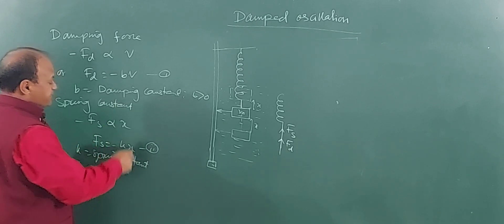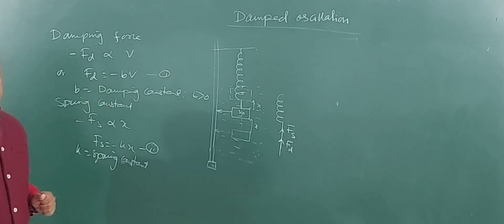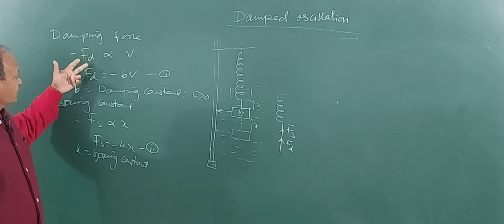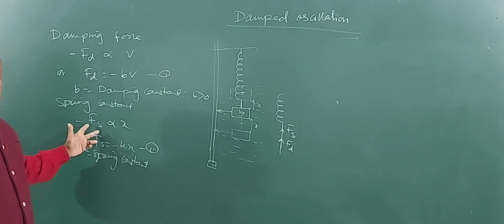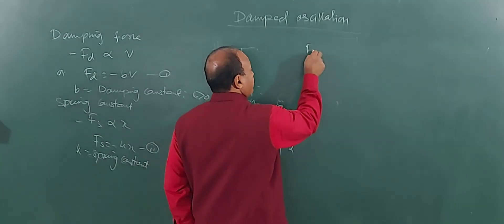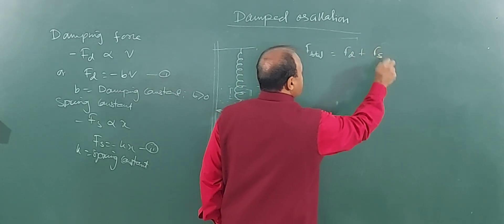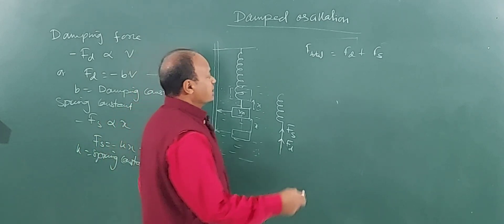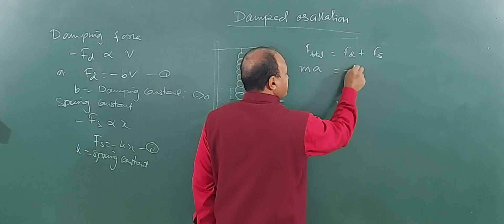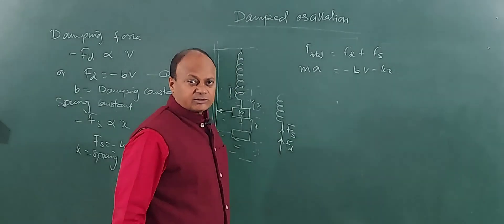So these two forces together produce the necessary retardation or damping in the motion. The net or total force will be the damping force plus the spring force. Using Newton's second law: ma equals Fd plus Fs, which gives ma equals minus b times v minus k times x. This is a time-dependent force because acceleration depends upon x, and v also depends upon x.